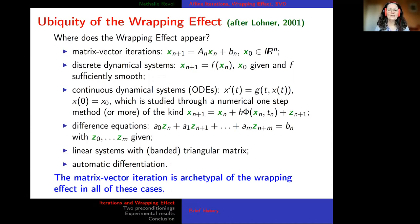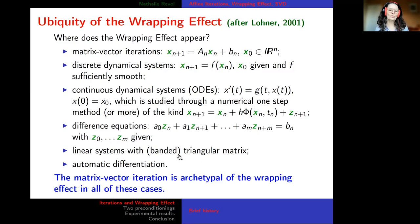The wrapping effect appears almost everywhere: in matrix iterations, when simulating discrete dynamical systems, when integrating continuous dynamical systems, when studying difference equations, with bounded triangular matrices, and in automatic differentiation. In all these cases the new iterate is a linear combination of previous ones. So this iteration I want to study is archetypal of the wrapping effect across all these applications.